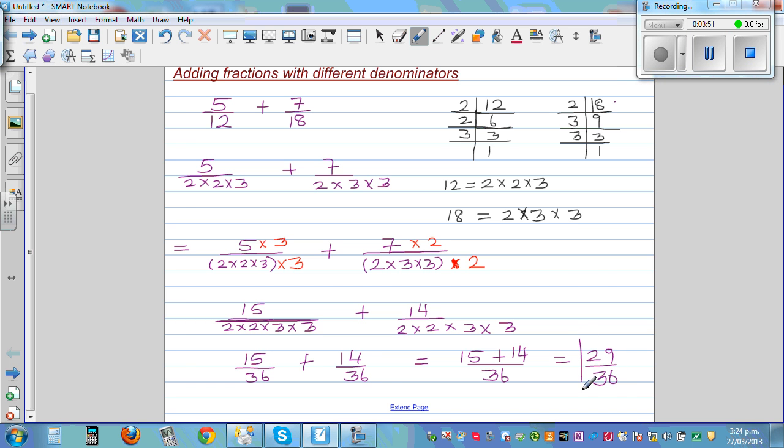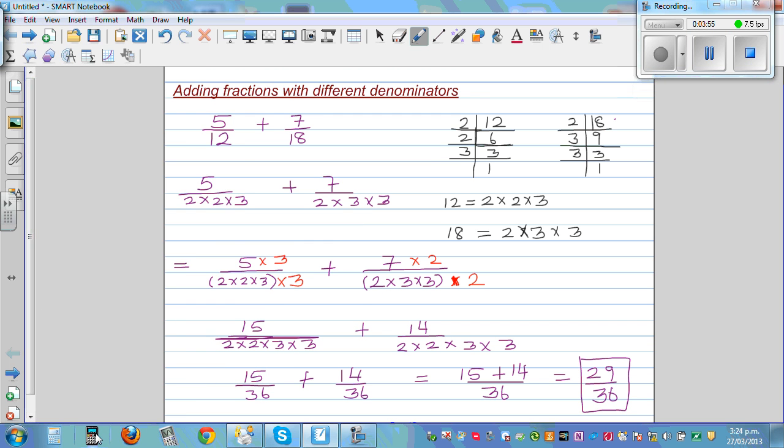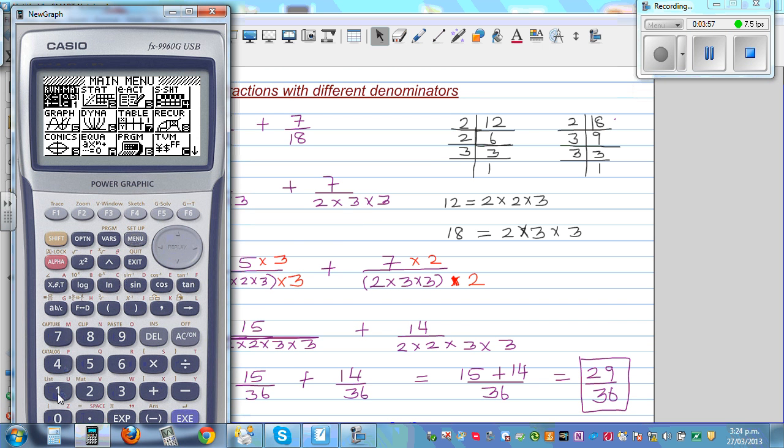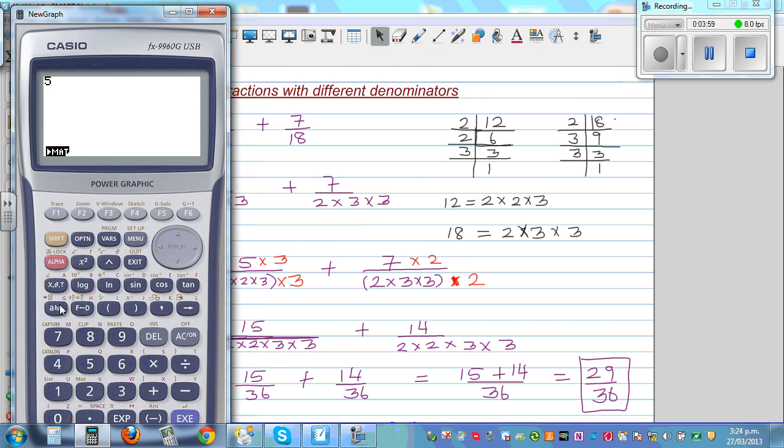And this is your final answer. So let's confirm it on the calculator. So this is 5 divided by 12 plus 7 divided by 18, and the answer is 29 over 36.